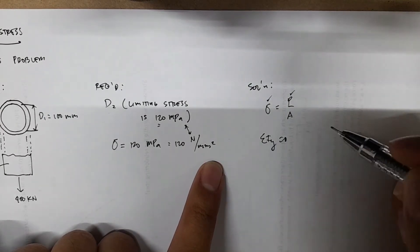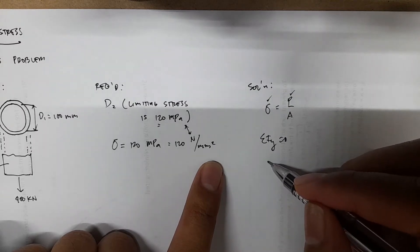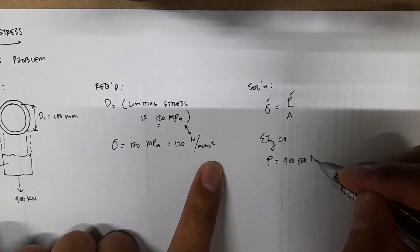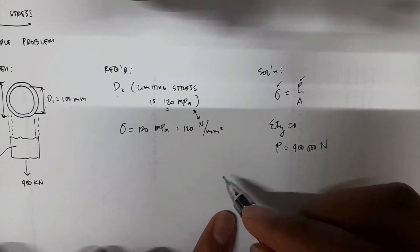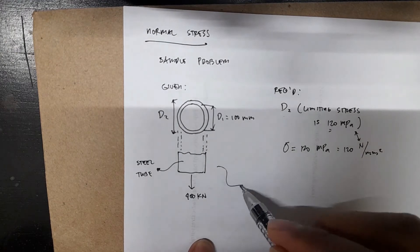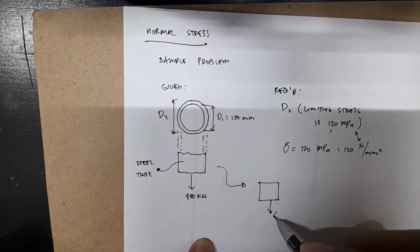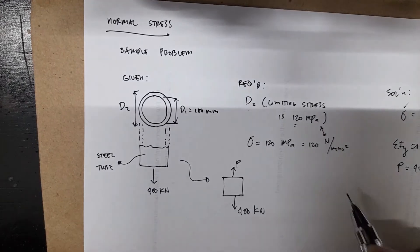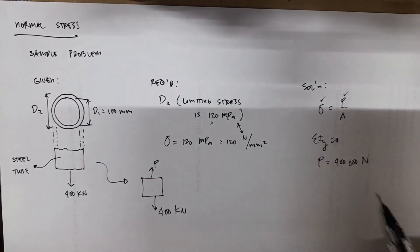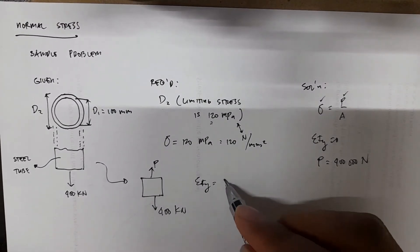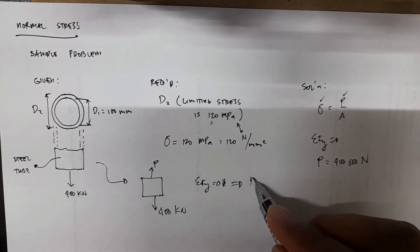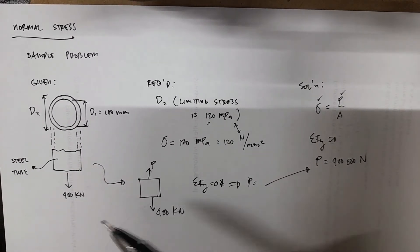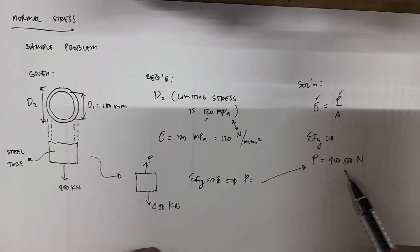First, summation of forces y equals zero, so P is just equal to 400,000 newtons. Where did you get this? If we isolate this one, we have a cut section here. This is 400 kilonewton, and this is P, your reaction or the internal force. So summation of forces is just equal to zero, which means P equals 400,000 newtons. No other forces are present.